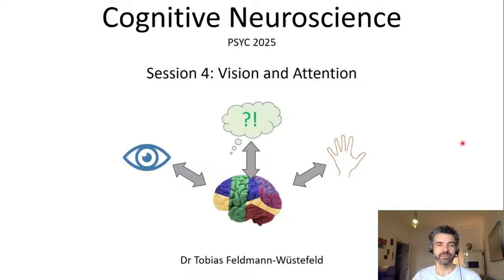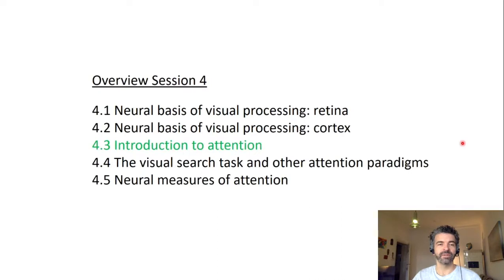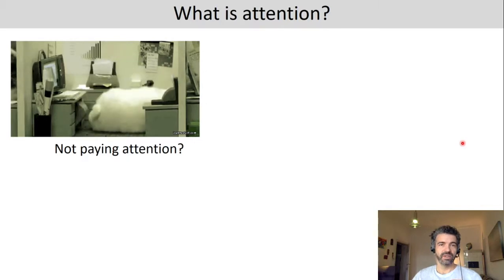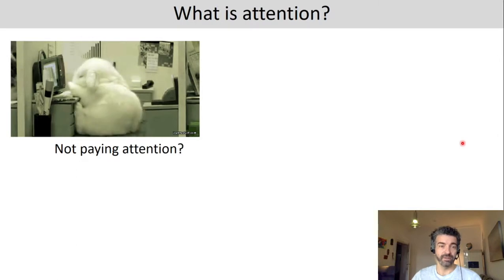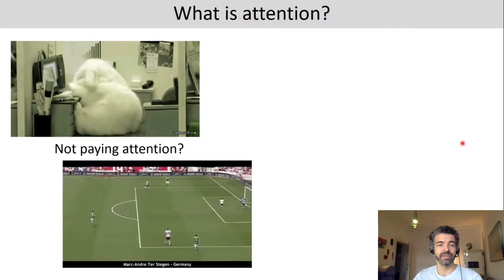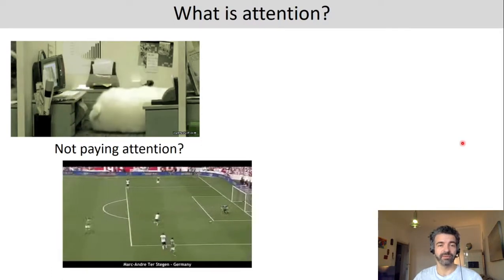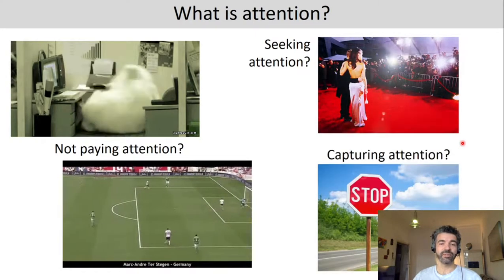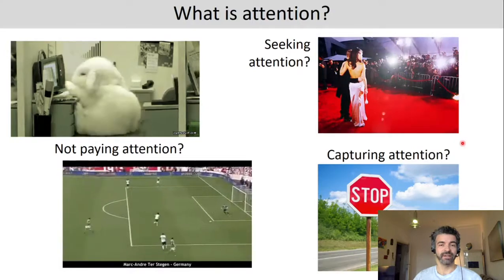This is the third part of today's session on vision and attention, and in the following we will talk about visual attention. So what is attention when we talk about visual attention in a psychological, neuroscientific context? Attention can mean a lot of different things depending on the context — for example, not paying attention at work because you're tired, not paying attention when you're a goalkeeper, seeking attention, or something capturing our attention like a salient stop sign.